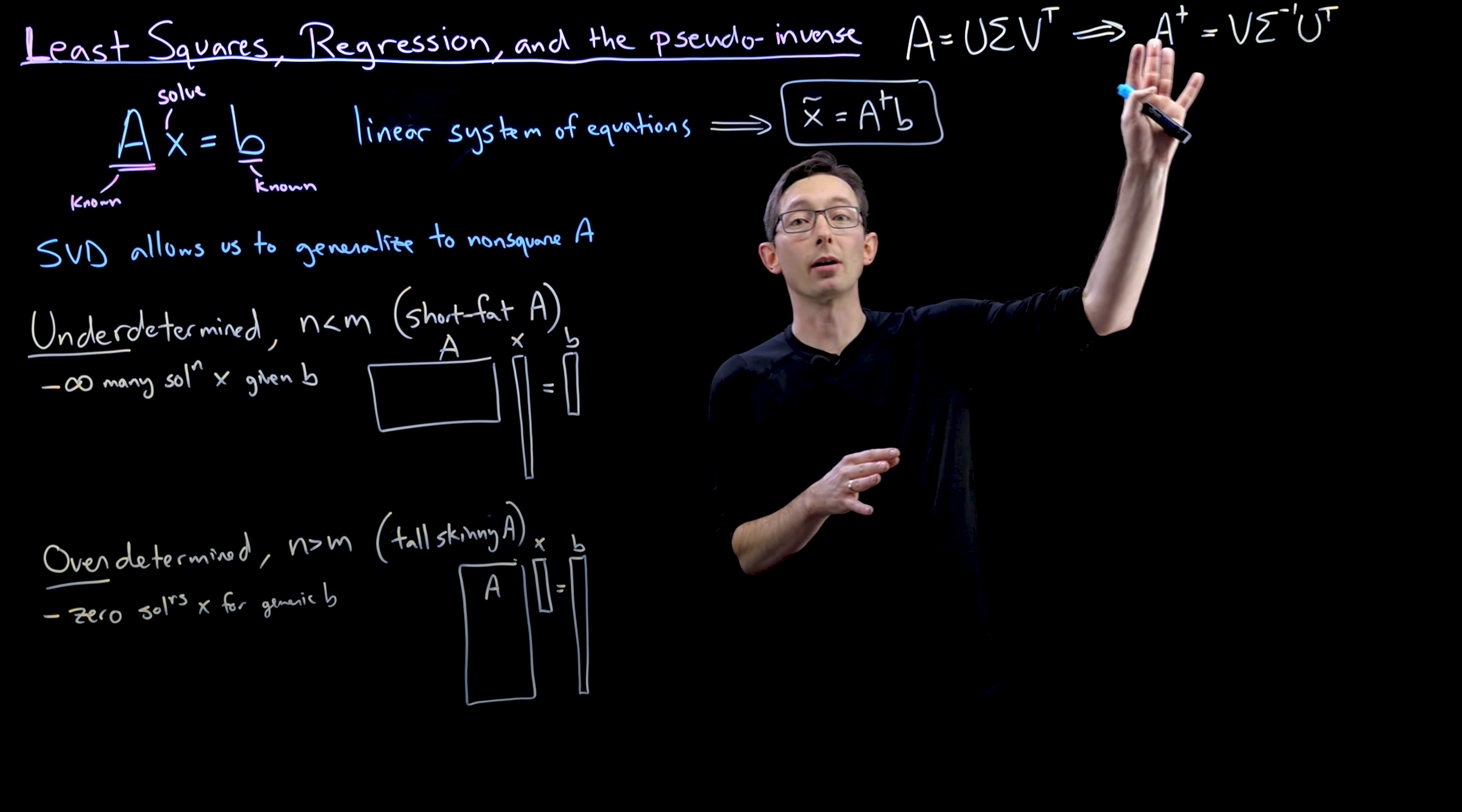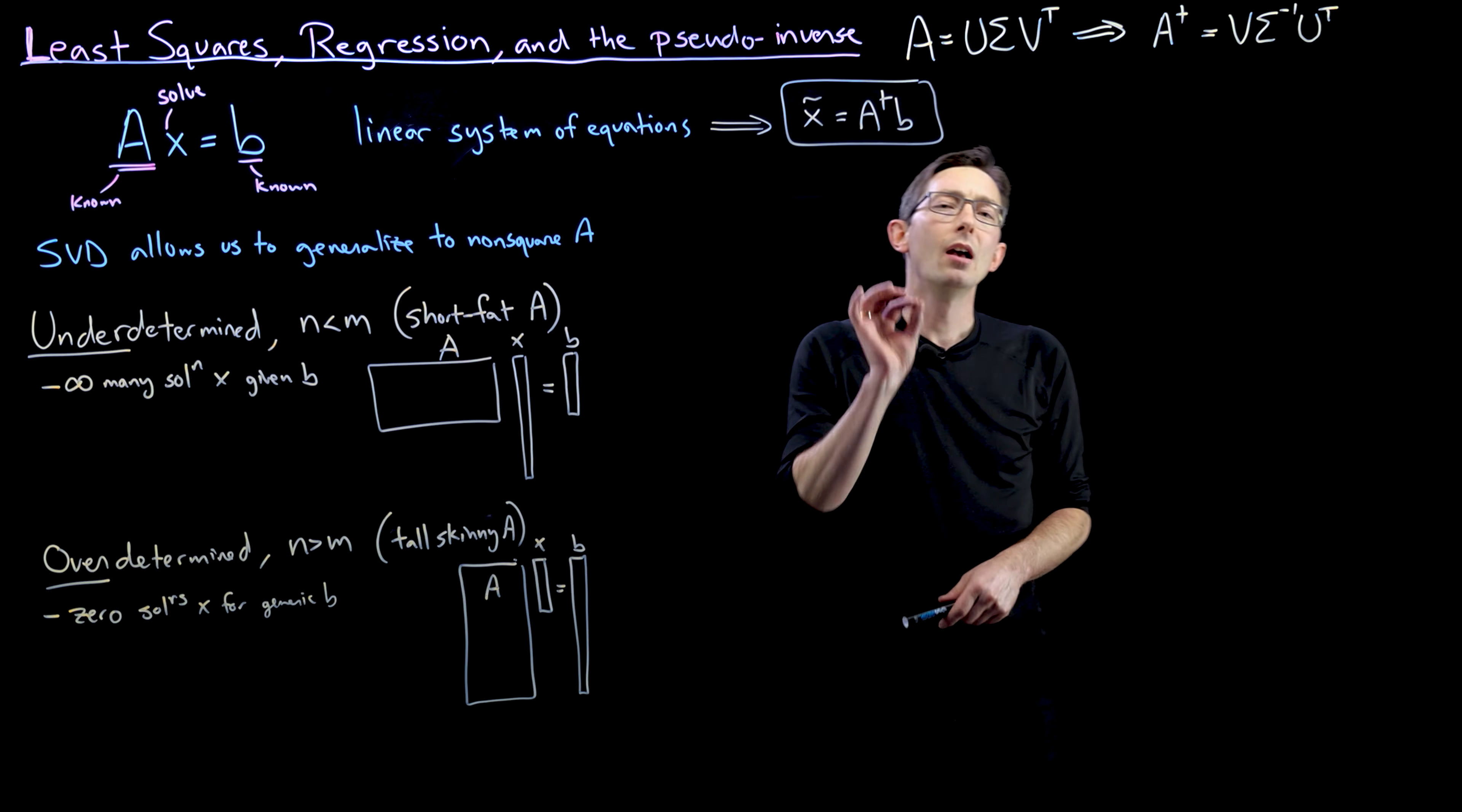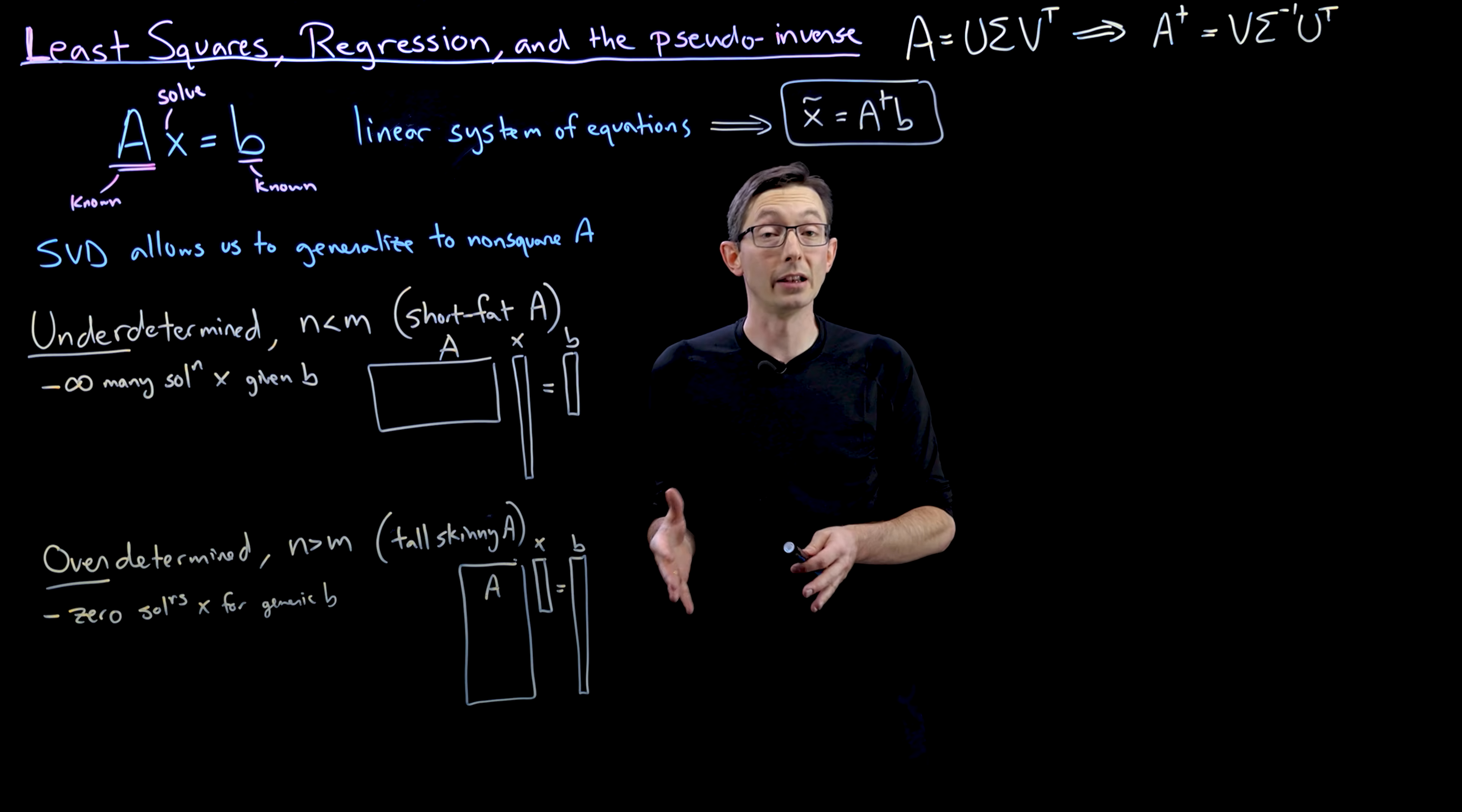Namely, we do this using the Moore-Penrose pseudo-inverse here, A dagger. And we've been talking about underdetermined and overdetermined systems of equations where, in general, you either have infinitely many or no solutions of these equations. But I want to be a little bit more mathematically precise about exactly what are the conditions on the A matrix and the vector B so that you have no solutions, a unique solution, or infinitely many solutions.